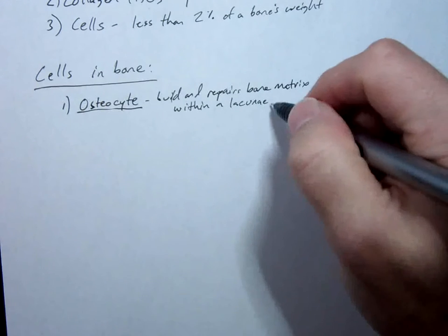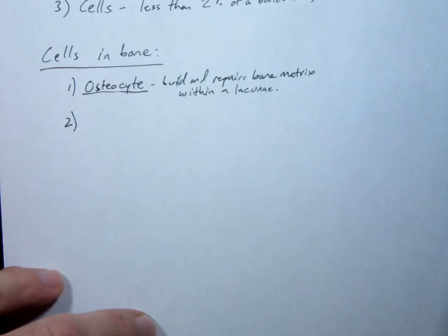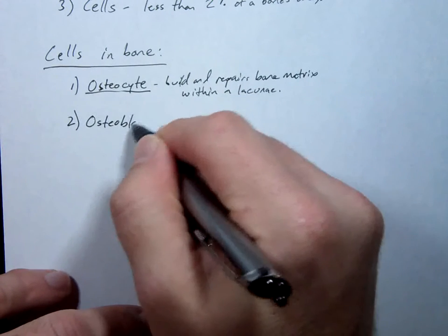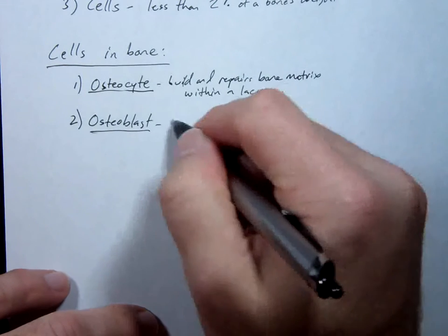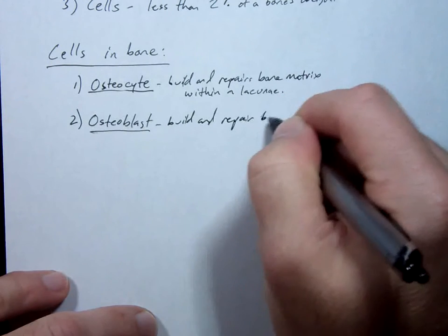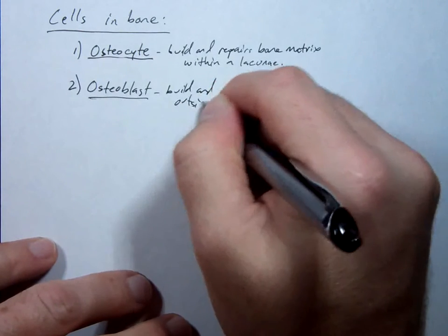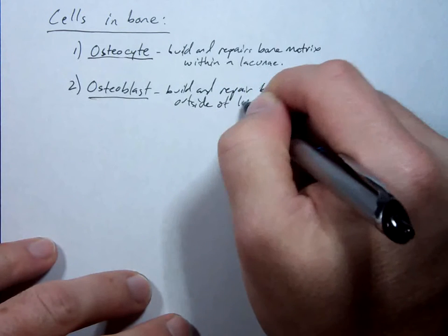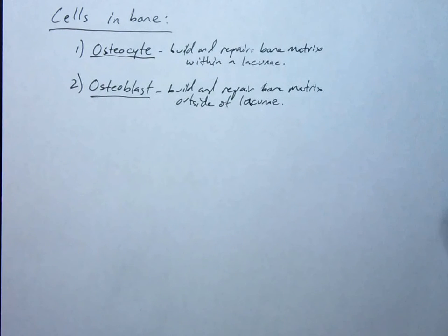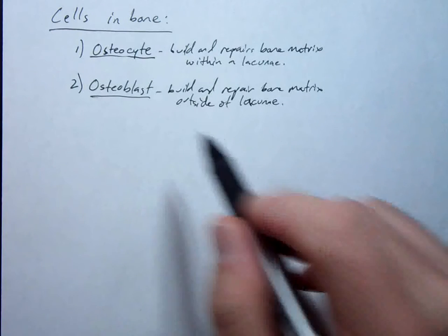If an osteocyte ever gets free of its lacuna — say during a bone break or something — it changes into an osteoblast. Osteoblasts build and repair bone matrix outside of a lacuna. They are still doing the same job but are not stuck within that structure. That's the major distinction between osteocytes and osteoblasts — they also look different because they're not squished into that little spot.